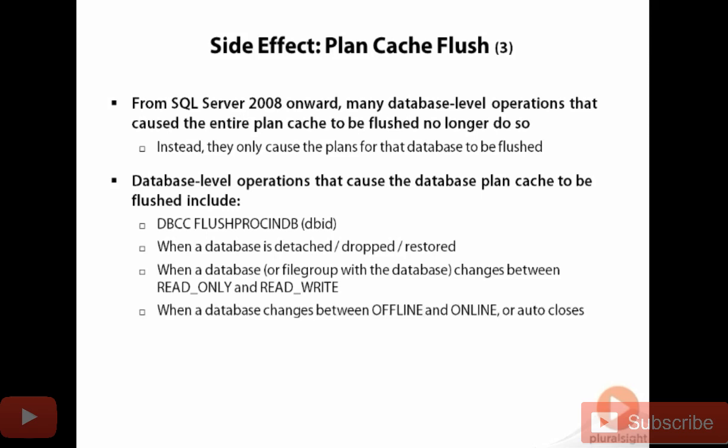It's just something to be aware of. If you ever take a database offline or auto-close a database, then that database's plan cache is flushed. And there are others. What's really frustrating is I've never found a single place — whether in Books Online or even the plan cache white papers — that gives a definitive list of all the things that cause the plan cache to be flushed. I even just recently found that changing your recovery model will cause your plan cache to be flushed, and I haven't seen that documented anywhere.